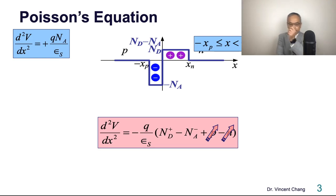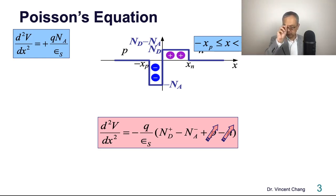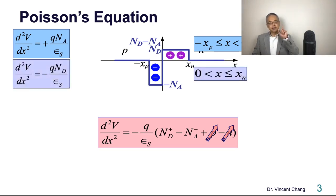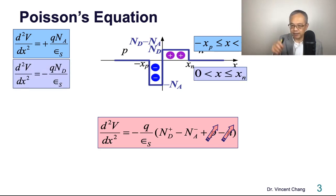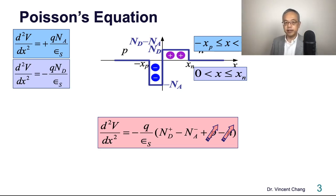For the right-hand side, there is no acceptor — only donor ions. So only the first term remains: negative Q·Nd⁺ / εs. Again, with complete ionization, Nd⁺ equals Nd. So this is our set of governing equations — the Poisson's equation — with the blue one for the left-hand side and the purple one for the right.